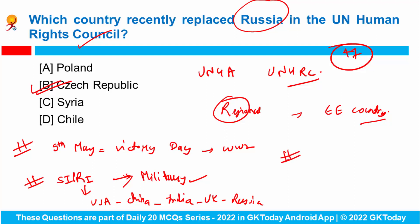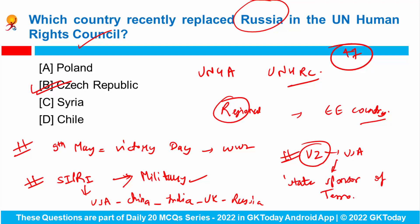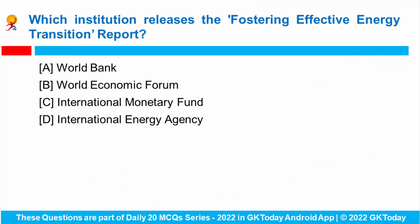President of Ukraine Vladimir Zelenskyy has asked the USA to include Russia in its State Sponsor of Terrorism listing, meaning it wants the USA to give Russia the State Sponsor of Terrorism tag. Already four countries are in this list: Syria, Iran, North Korea, and Cuba. Vladimir Zelenskyy wants Russia to be also included in this list.